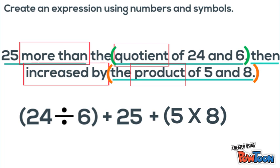So here we have our numerical expression for 25 more than the quotient of 24 and 6 then increased by the product of 5 and 8.